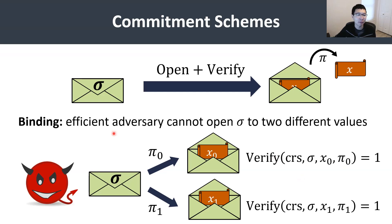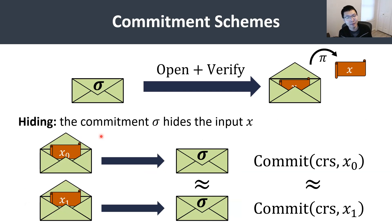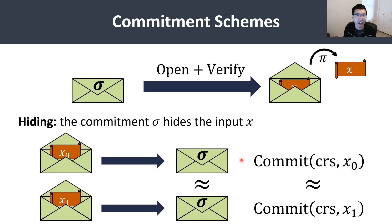A second property that we'll often consider is hiding, which basically says that the commitment should also hide the underlying message. So once I put the message into the envelope and give it to you, if the envelope is sealed, you should not know what message I sent. Formally, this is defined by requiring an analog of semantic security, where a commitment to some message X0 is computationally or possibly statistically indistinguishable from a commitment to a message X1.